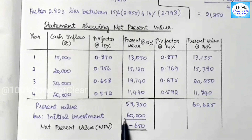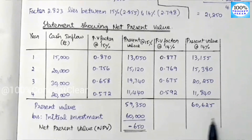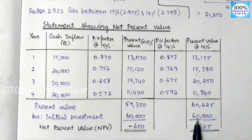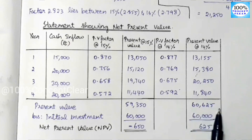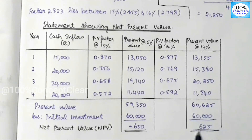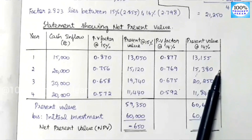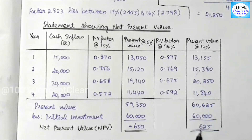The initial investment is 60,000. So we subtract: 60,625 minus 60,000 equals 625. When we use 14%, we have a positive NPV value of 625.